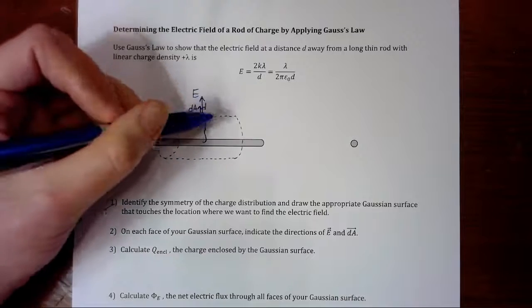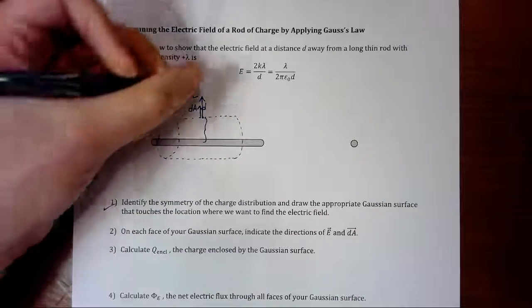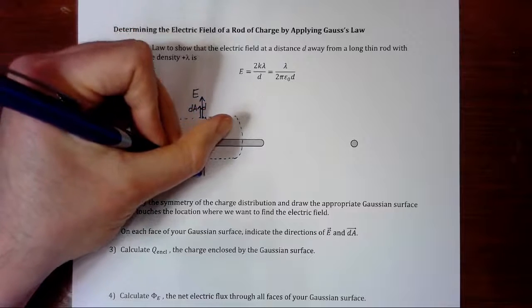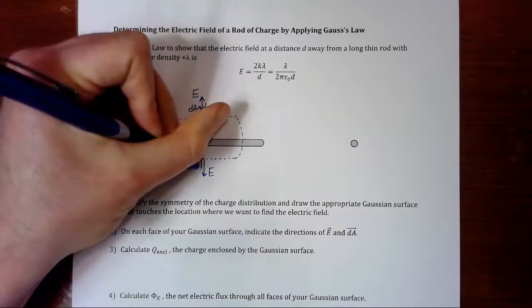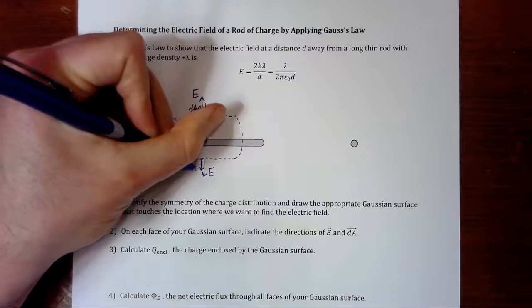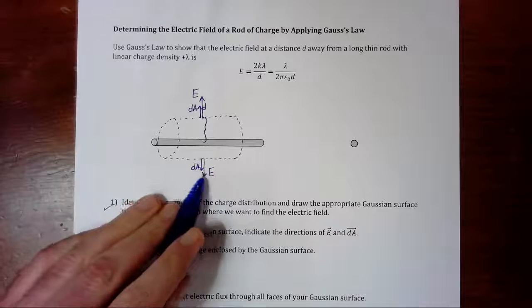And that's going to be true everywhere along the wall of this cylinder. So even down here, the electric field is outwards, and the area vector is also outwards, perpendicular to the surface and parallel to E.